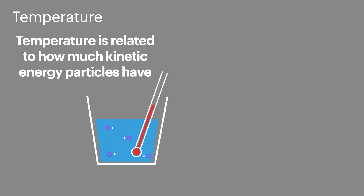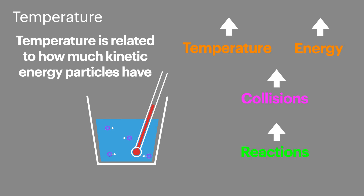Temperature is related to the amount of kinetic energy the particles have. So if you increase the temperature you'll increase the energy of the particles. This means that the particles are moving faster with more energy, leading to a greater frequency of collisions. Because these collisions have more energy, a greater portion of them result in a successful chemical reaction. Because you're increasing both the collisions and the energy, temperature has a two-fold impact on the rate of reaction.